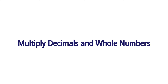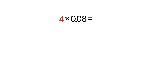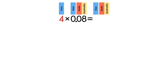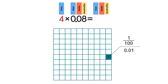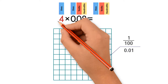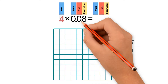Multiply decimals and whole numbers: how do we multiply four times eight hundredths? We're going to use a place value chart and a decimal model. One square on the decimal model represents one hundredth. Because we're multiplying, we need four groups of eight hundredths.